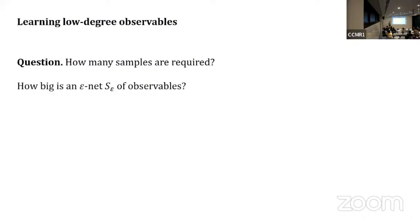Let's think about the cardinality of an epsilon net on this set of observables. Well, A is degree D, so there's poly in N parameters to estimate. And A is also bounded, so each coefficient lives in some interval.